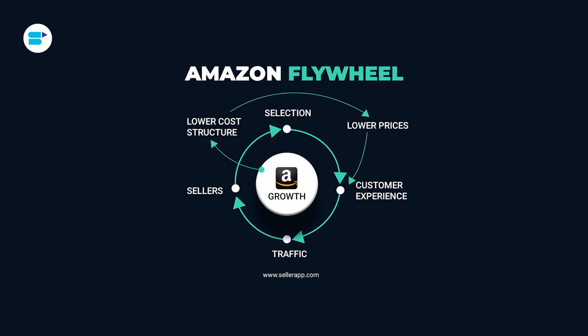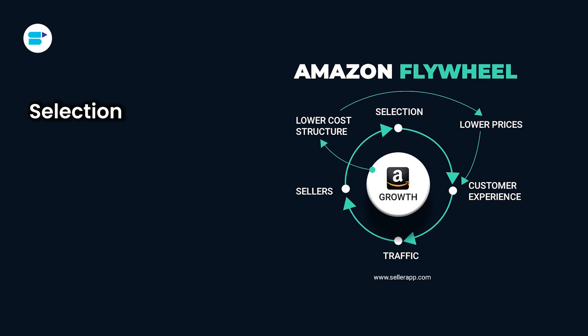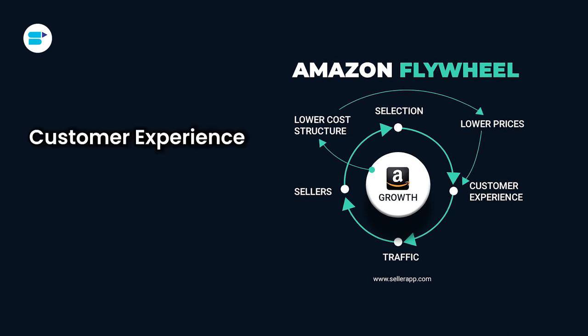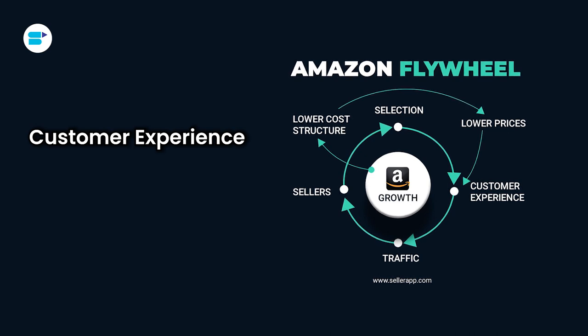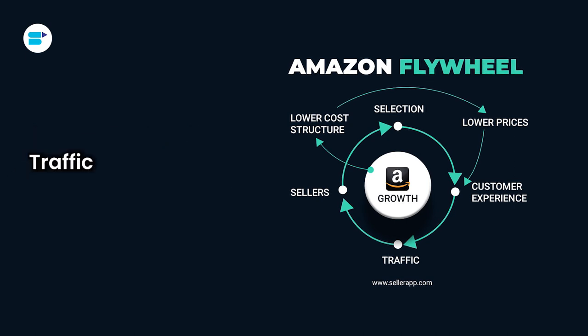Here's a breakdown of each part of the Amazon flywheel and what it represents. The three pillars of a successful Amazon flywheel are selection, customer experience, and traffic. First, selection refers to the wide variety of products available on Amazon. By offering a broad selection, Amazon can attract more customers and provide a better shopping experience. Next is customer experience — by focusing on the customer and constantly improving the shopping experience, Amazon has built a loyal customer base. Third is traffic, which simply refers to the number of customers driven to Amazon.